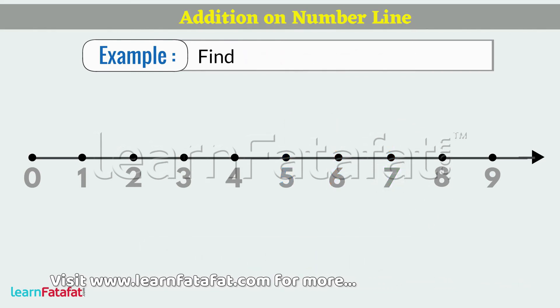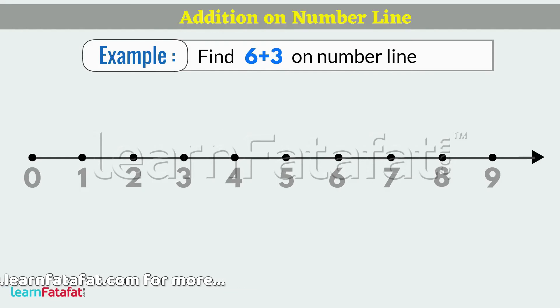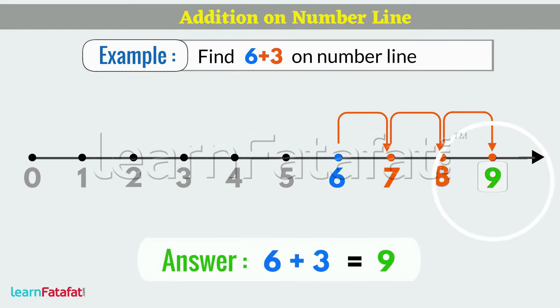Example: find 6 plus 3 on Number Line. Locate 6 and make 3 jumps to the right of 6. Answer is 9.